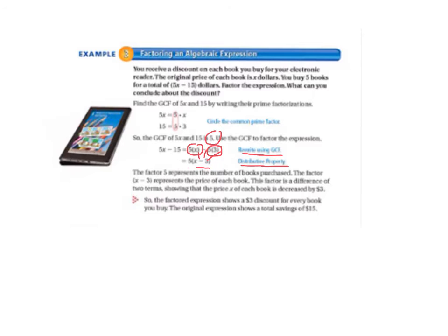The factor 5 represents the number of books purchased, and the factor x minus 3 represents the price of each book. This factor is a difference of two terms, showing that the price x of each book is decreased by 3 dollars. The factored equation shows a 3 dollar discount for every book you buy. The original expression shows a total savings of 15 dollars.